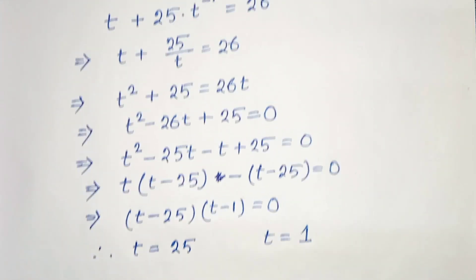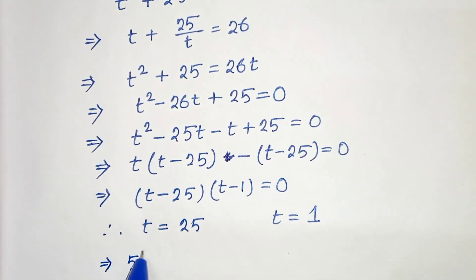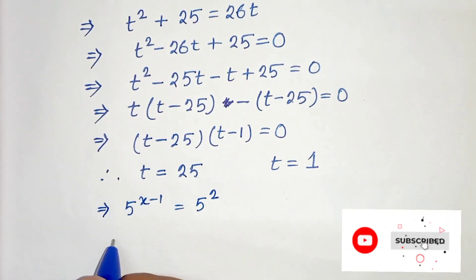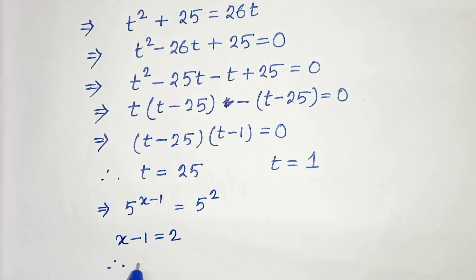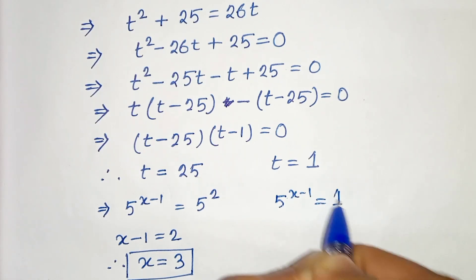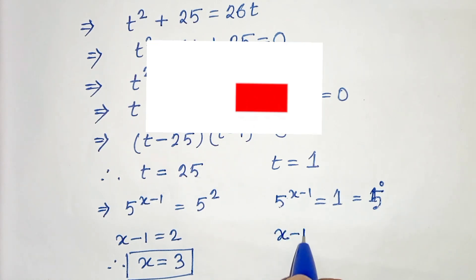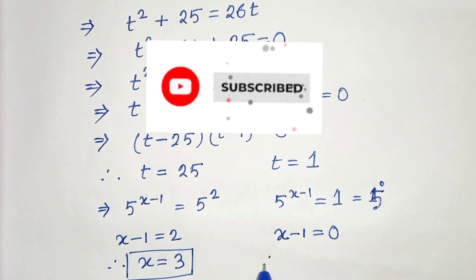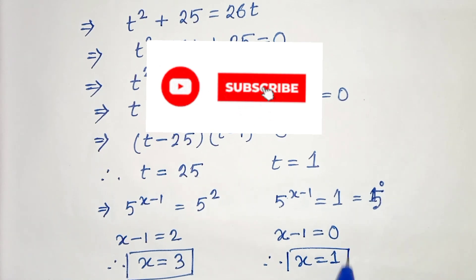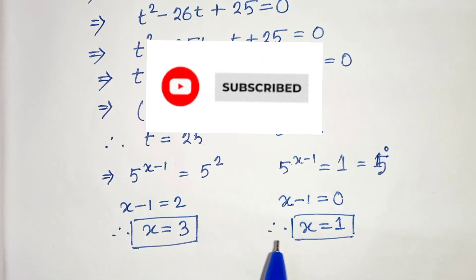Our t was 5 to the power x minus 1. So for t equals 25, since 25 is 5 squared, comparing both sides we get x minus 1 equals to 2, therefore x equals to 3. This is our first solution. For t equals 1, we get 5 to the power x minus 1 equals to 1, which is 5 to the power 0, so x minus 1 equals to 0, therefore x equals to 1. So we have x equals to 3 and x equals to 1 as our solutions. Thanks for watching.